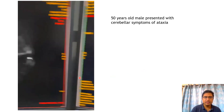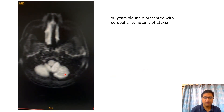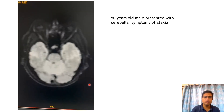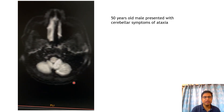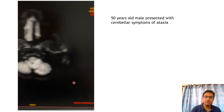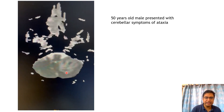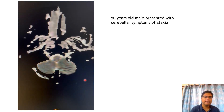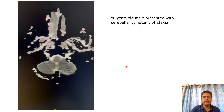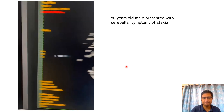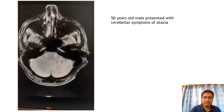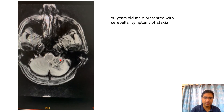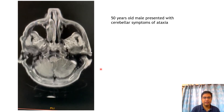On DWI images, there are hyperintense areas within the lesion. There is corresponding subtle hypointensity on the ADC map, suggesting areas of restricted diffusion within the lesion. On axial GRE images, we can see intense blooming of the folia in the left cerebellar hemisphere.